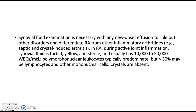Synovial fluid examination is necessary with any new onset effusion to rule out other disorders and differentiate rheumatoid arthritis from other inflammatory arthritides, for example septic arthritis or crystal-induced arthritis. In rheumatoid arthritis, during active joint inflammation, synovial fluid is turbid, yellow, and sterile, usually with 10,000 to 50,000 white blood cells per microliter. Polymorphonuclear leukocytes typically predominate, but more than 50% may be lymphocytes or other mononuclear cells. Characteristically, crystals are absent in rheumatoid arthritis.